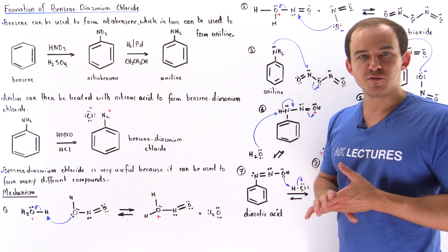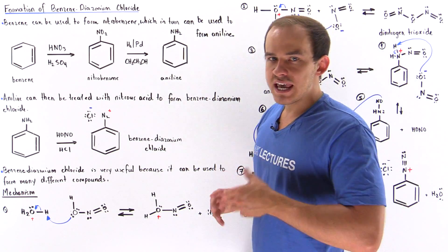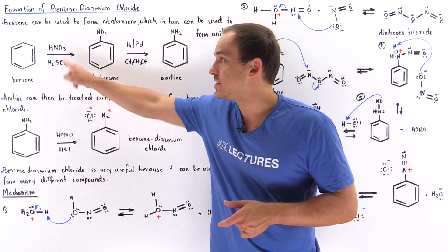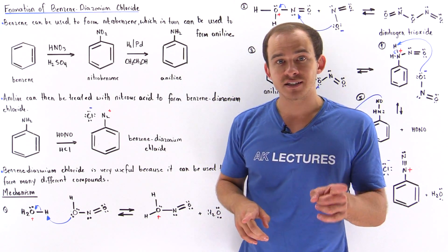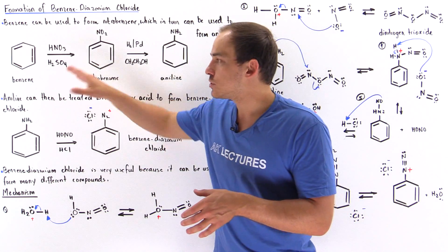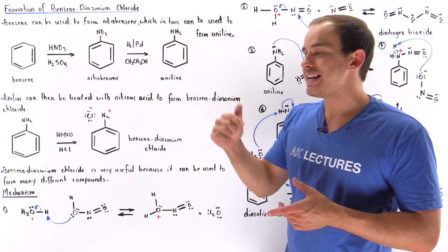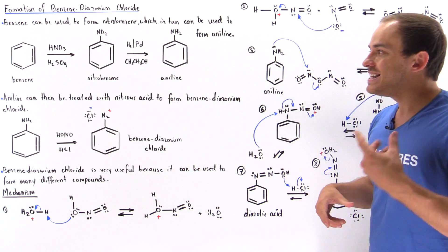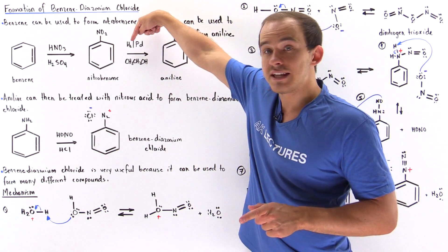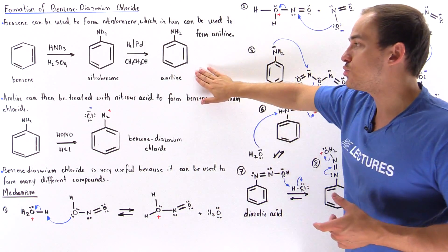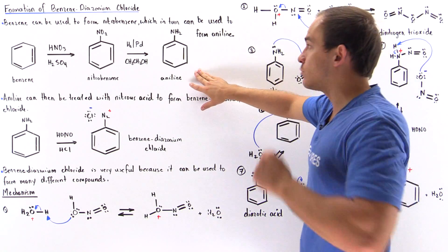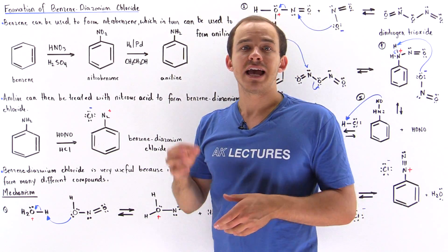Let's begin by looking at the general overview of the formation of this molecule, starting with the benzene molecule. If we take benzene and mix it with nitric acid in the presence of sulfuric acid, we form nitrobenzene — a reaction mechanism we discussed in a previous lecture. Next, if we take nitrobenzene and mix it with ethanol and this reactant, we produce the aniline molecule, which is a benzene ring containing an amine group.